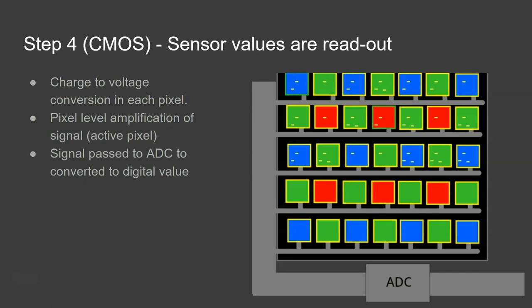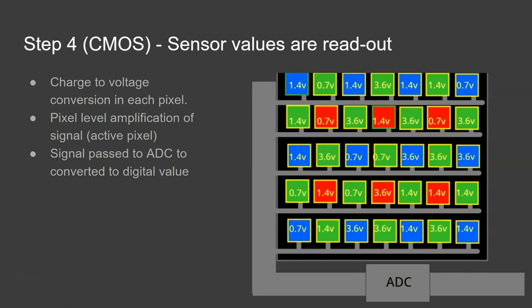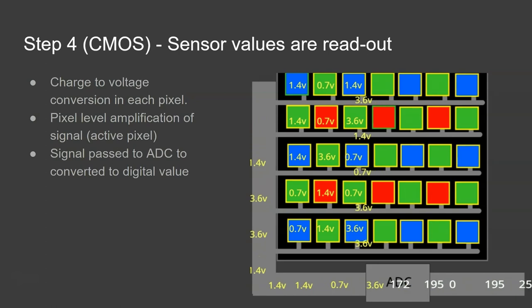Step four for a CMOS sensor is slightly different. So again the charge builds up inside of the pixel but the charge is converted to an electrical signal within the pixel itself and then it's passed along separately along these different rails all the way and then gets passed through to the ADC to convert from the analog signal that's being passed along through to a digital signal.